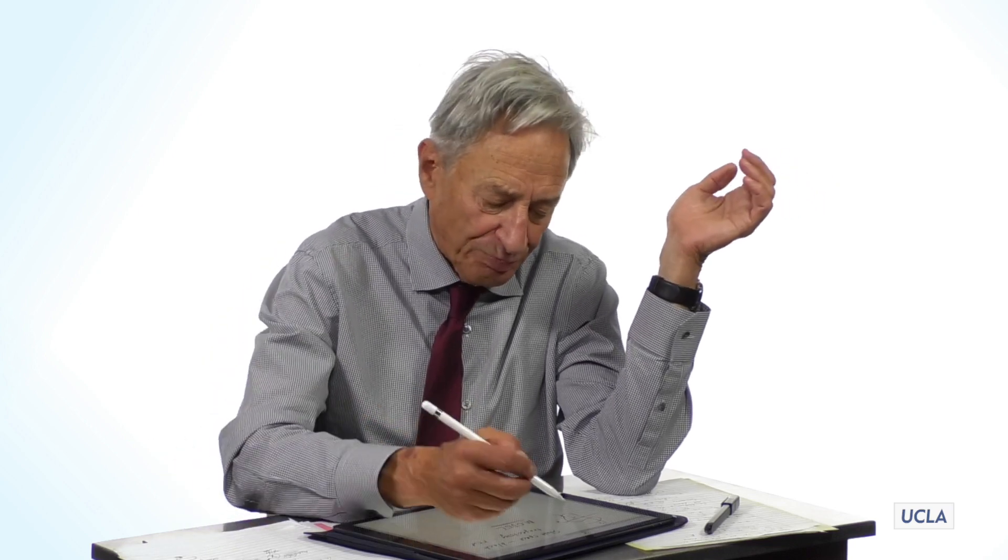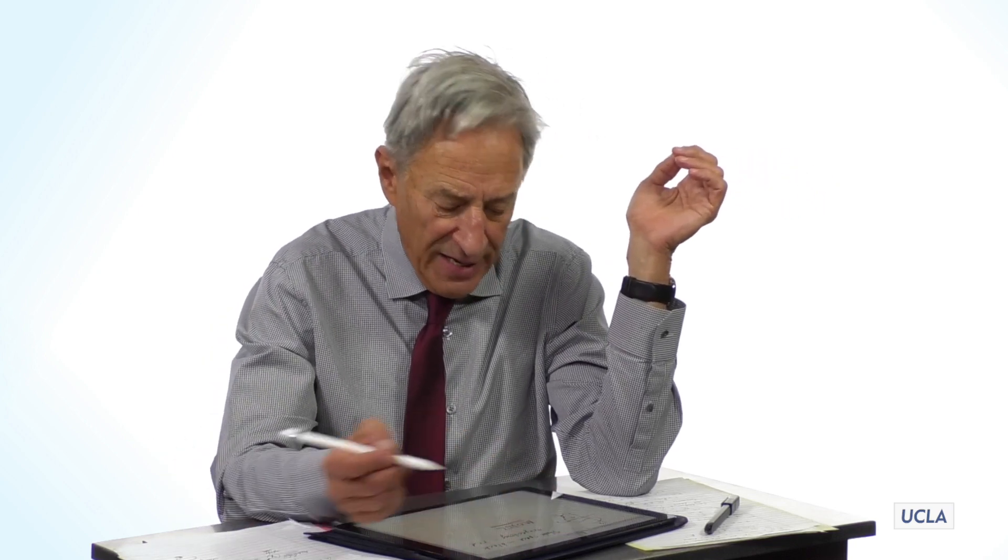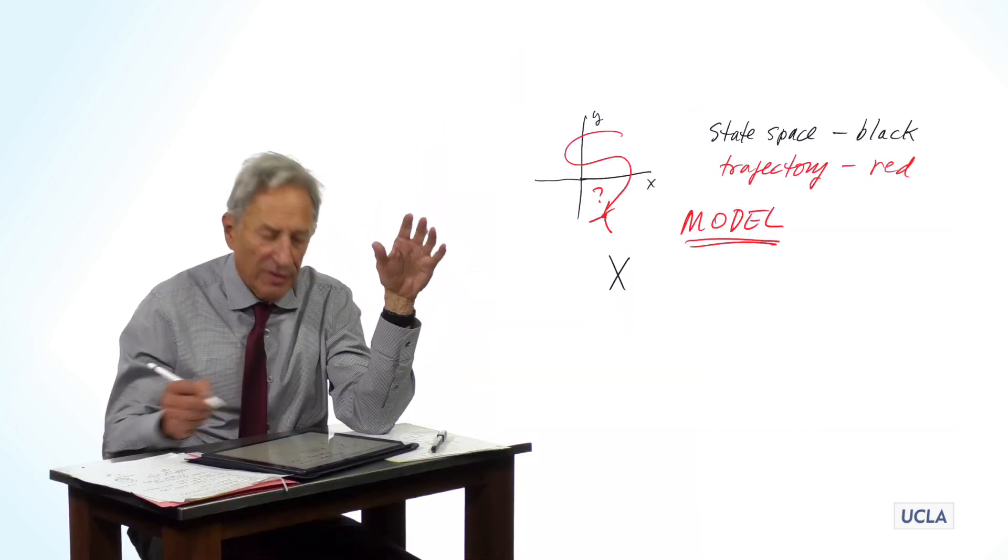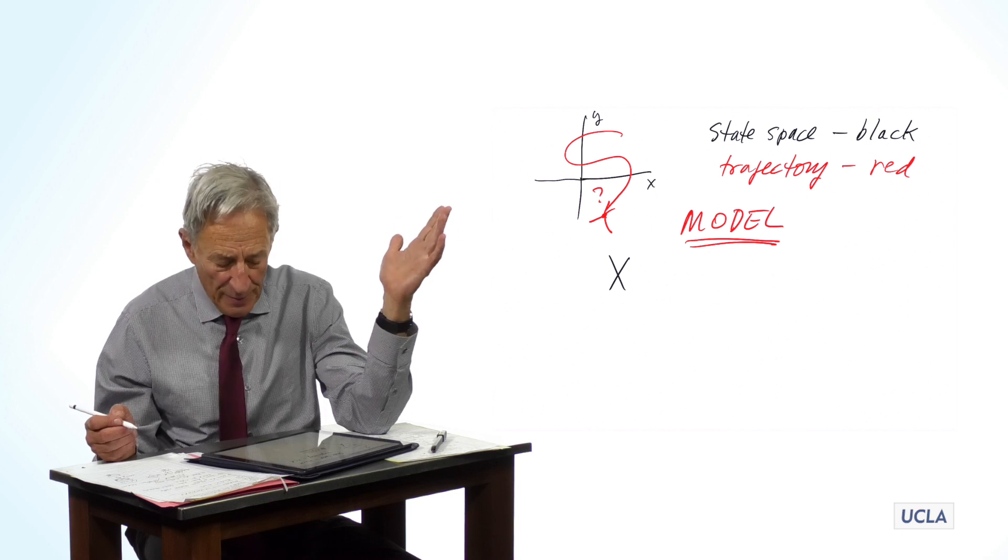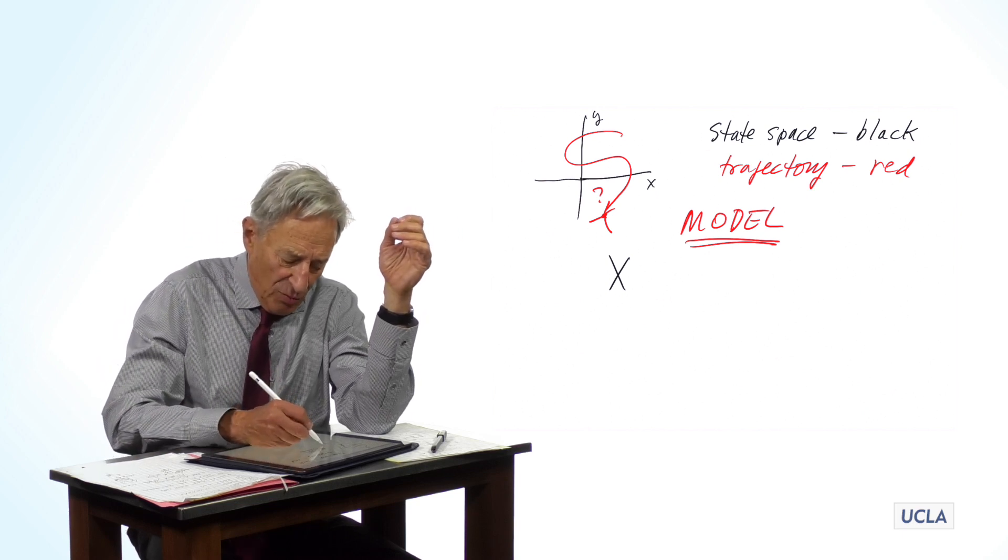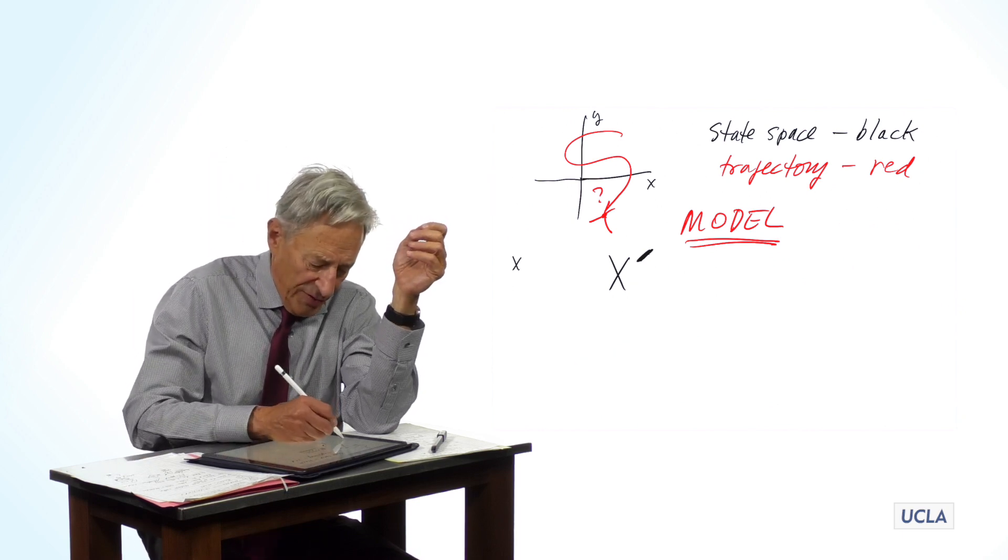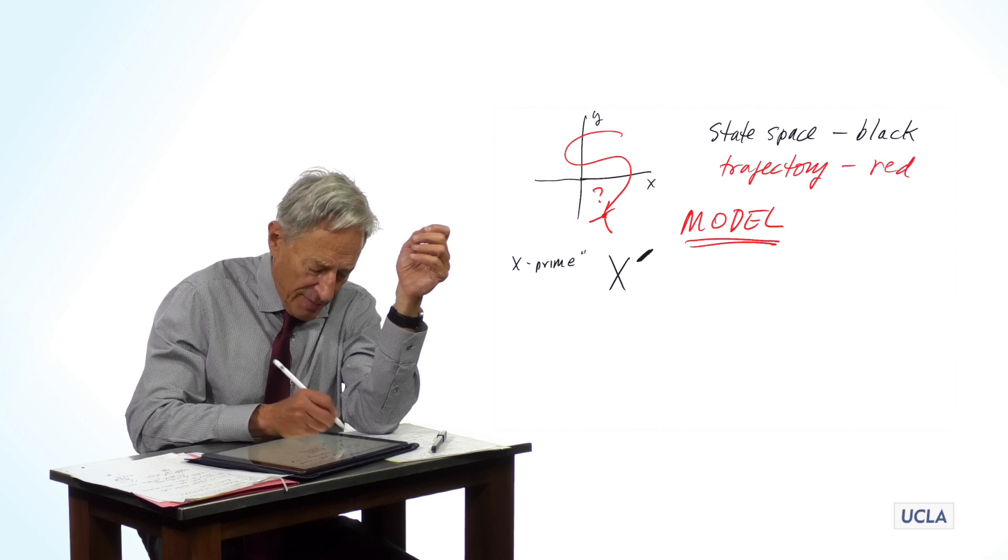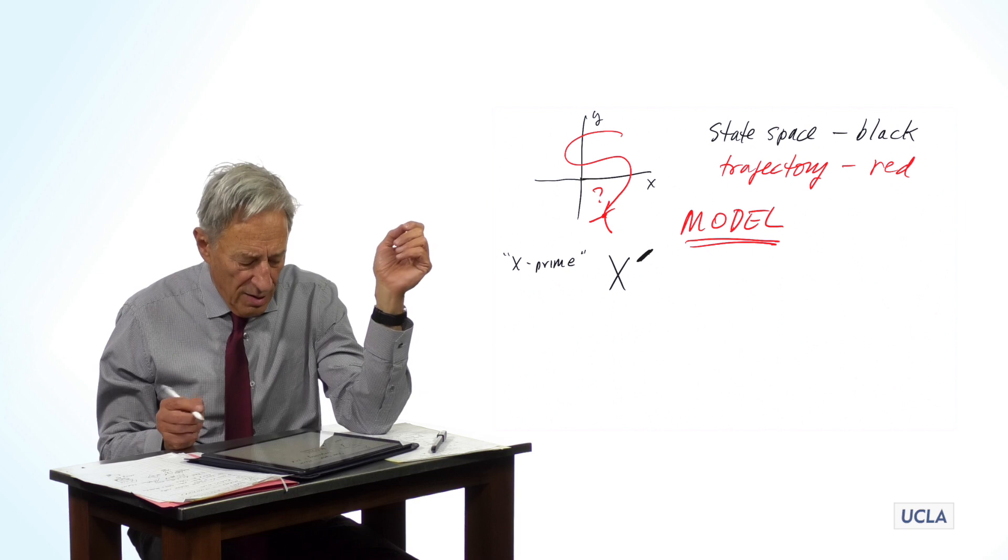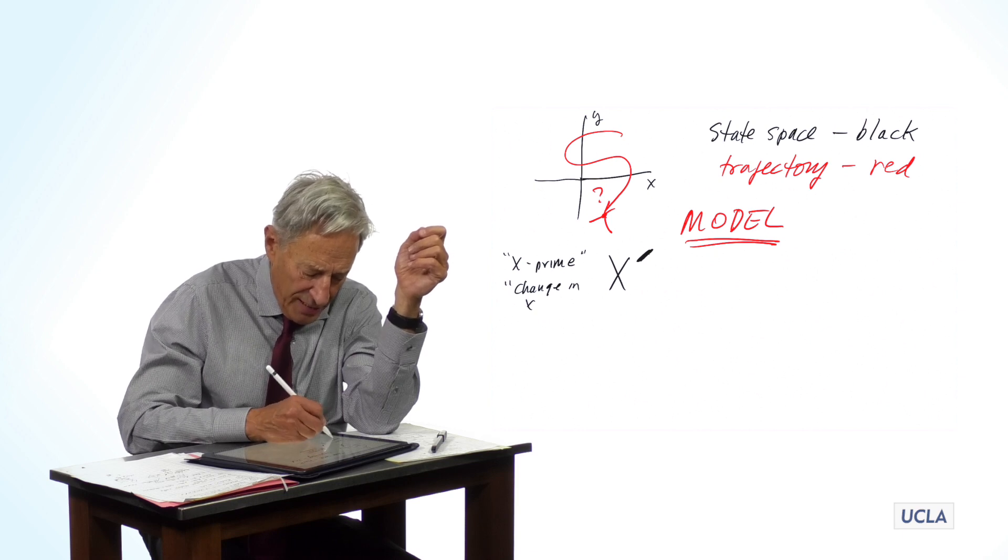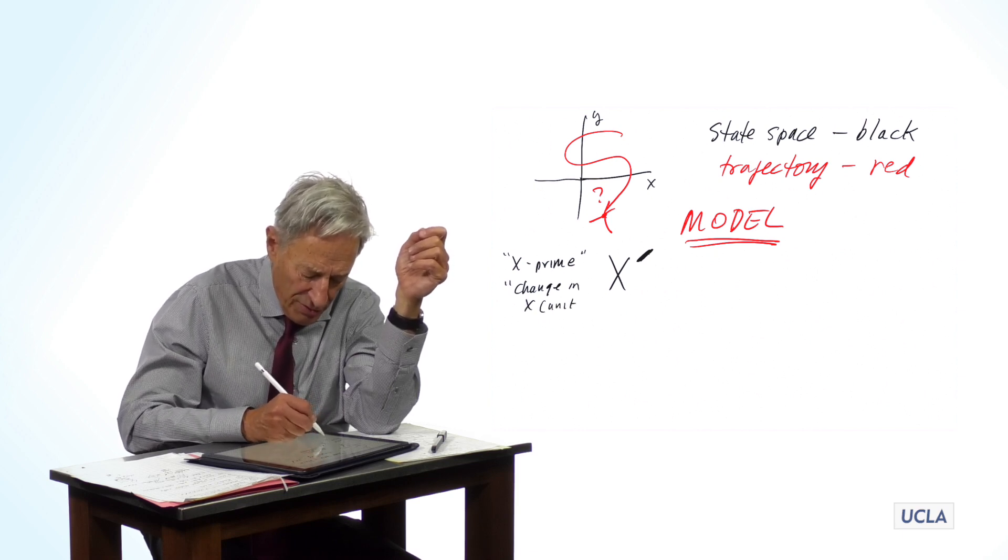Now what is a model? Because this is something that we're going to be doing a lot of. A model in our hands takes a very, very standard form. We start with a state variable. Let's say that state variable is x. And we write a little prime symbol next to it. And you read this as x prime. Now what is x prime? x prime you may think of as the change in x in, of course, a unit of time.